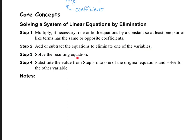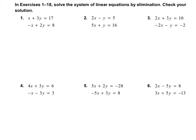Step 3 is to solve for the other variable. Step 4 is to substitute the value that you got in Step 3 into one of the original equations — it doesn't matter which one — and solve for the other variable. In Exercises 1 through 18, solve the system of linear equations by elimination and check your solution.